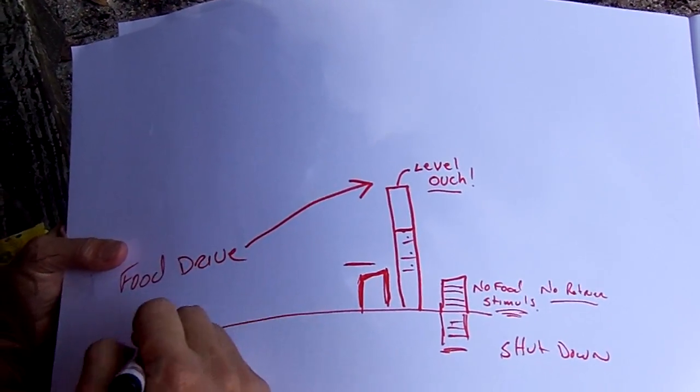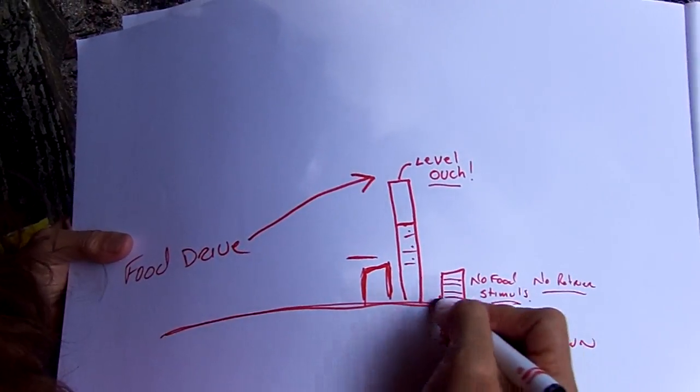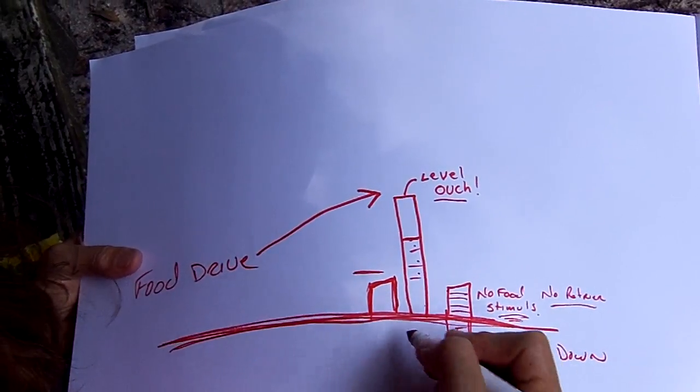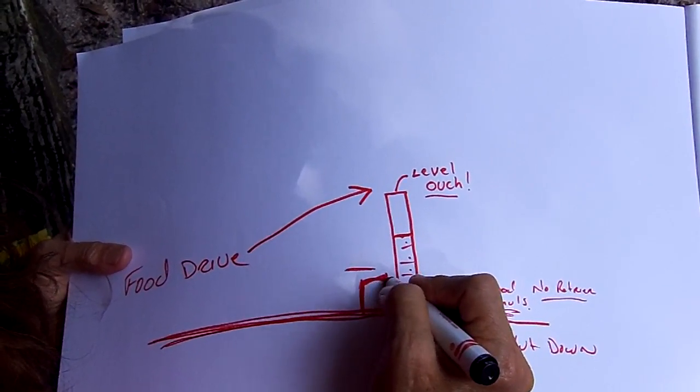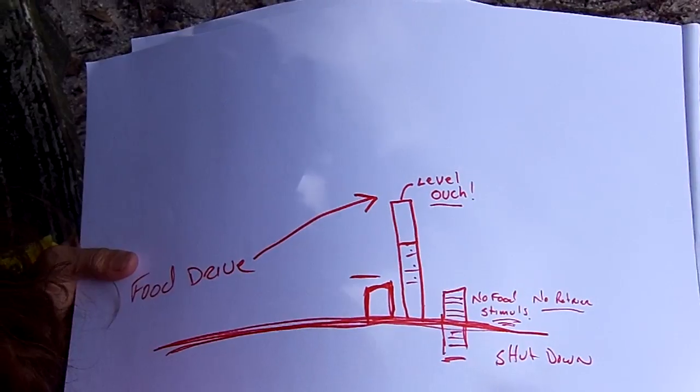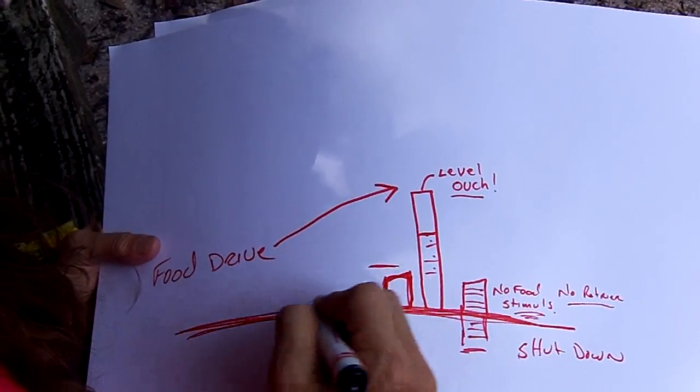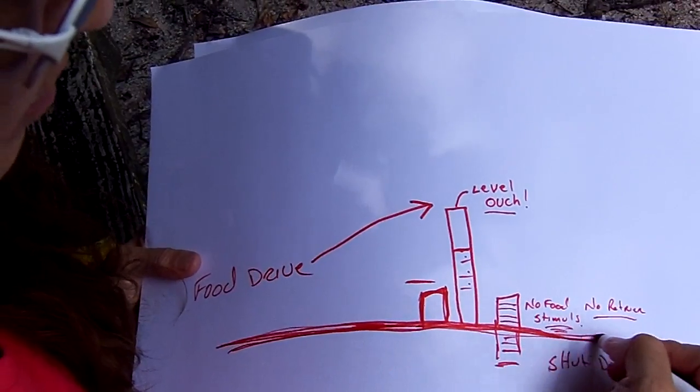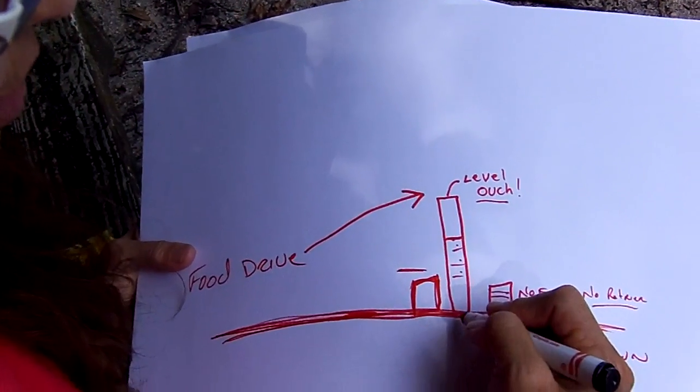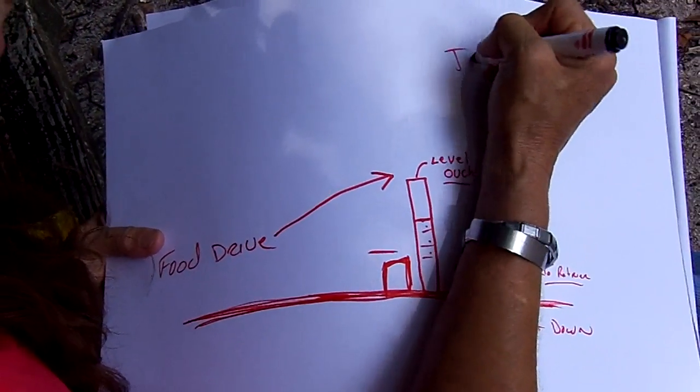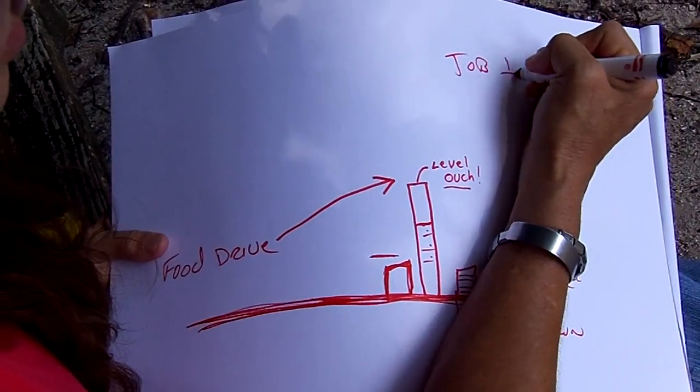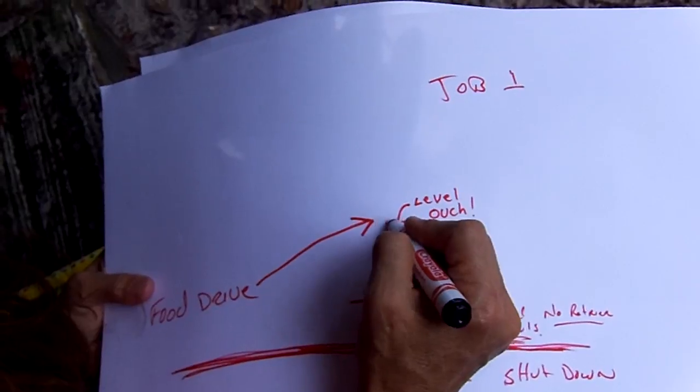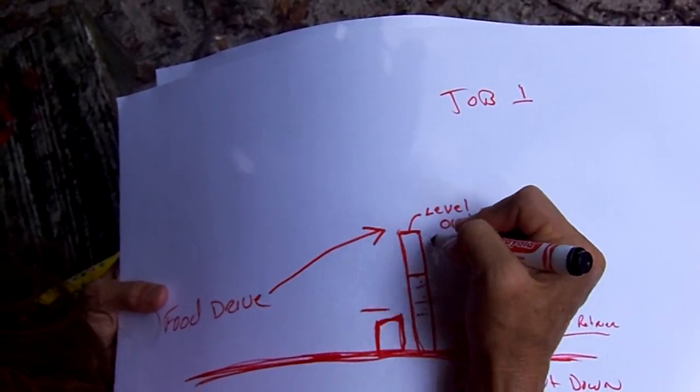If we just made this line right here, normal dogs that have to eat to survive, a lot of labs are higher food drive anyway. But honestly, if we just said every dog is on this line right here, job one needs to be to build our food drive up to here. And I'm going to tell you why.